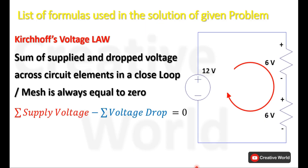While solving this problem, we will be using Kirchhoff's Voltage Law. This law states that the sum of supplied and dropped voltage across circuit elements in a closed loop is always equal to zero. The accumulative supplied and dropped voltage in a closed loop circuit will be equal to zero. The fundamental equation is: summation of all supplied voltage minus summation of all voltage drop equals zero.